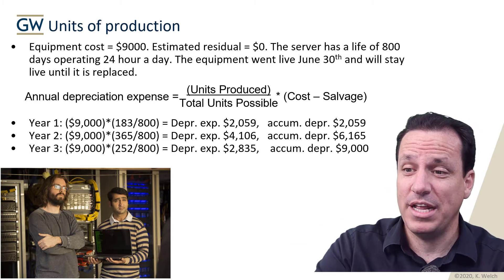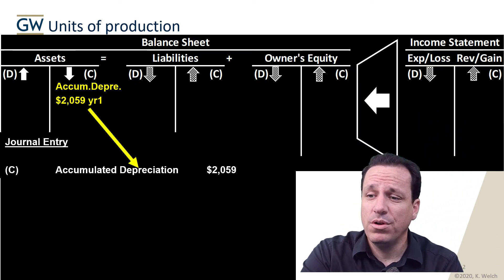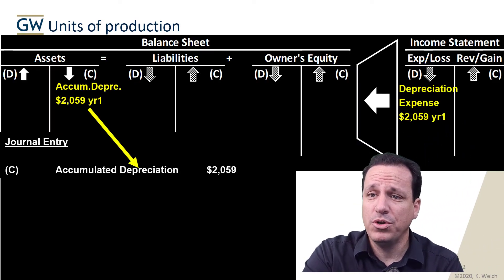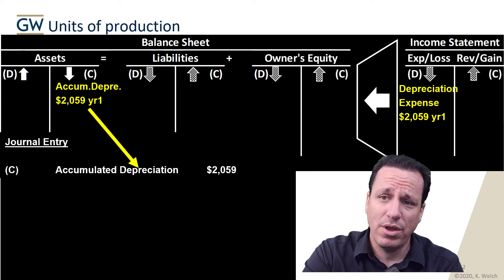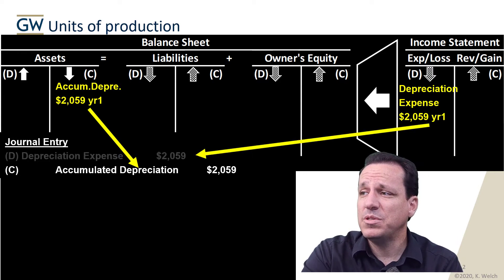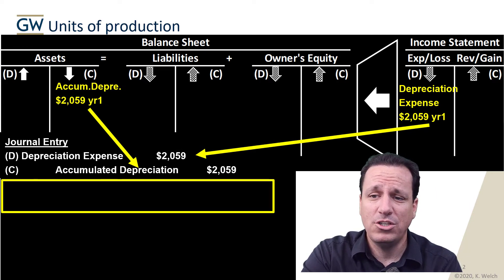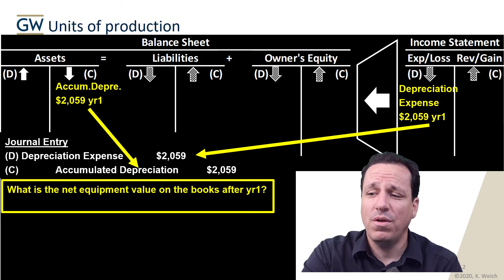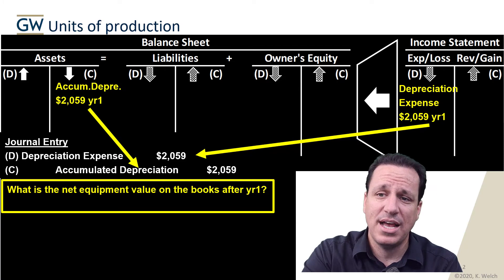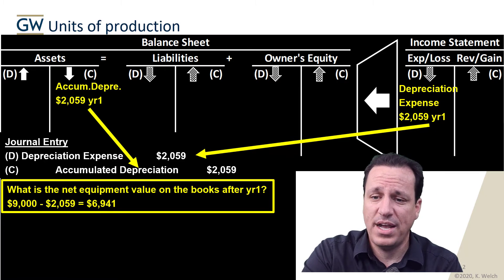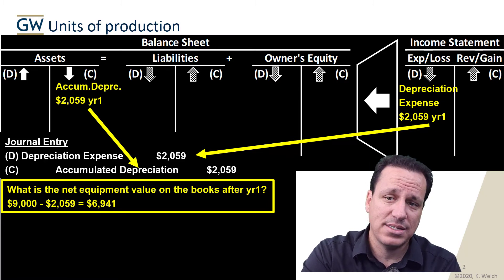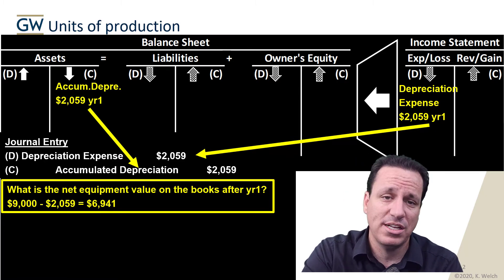That's units of production and how it's calculated. Journal entries are very similar to what we've seen in the past. Accumulated depreciation gets credited — it maintains a credit balance because it's a contra asset account. The income statement has a debit, and we debit depreciation expense each year. The net equipment value on the books after year one is $9,000 minus $2,059, which equals $6,941.